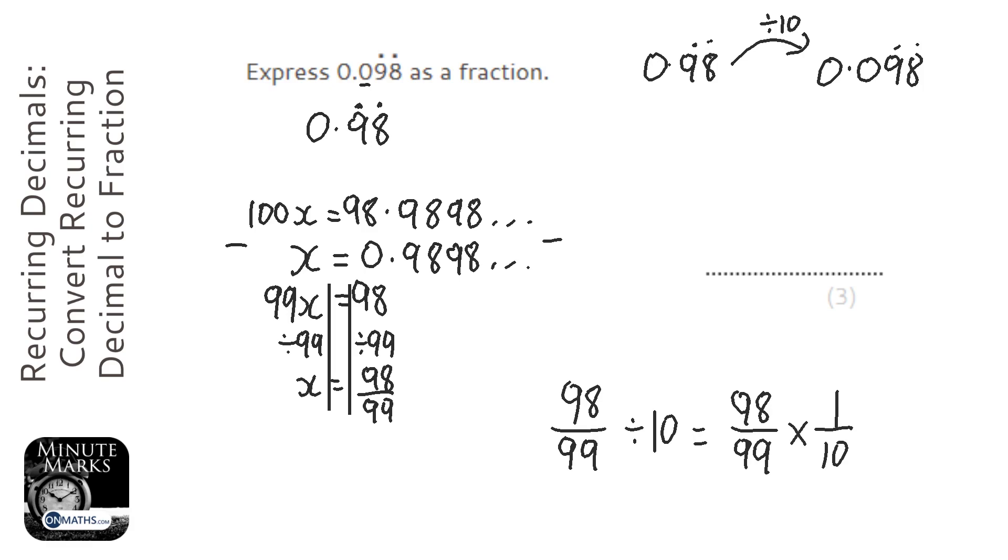And so 98 times 1 at the top is 98, and 99 times 10 at the bottom is 990.